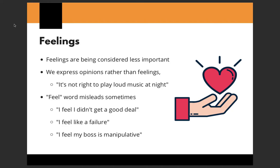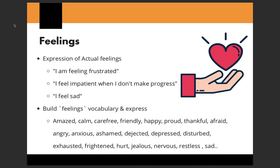Another example is using the word 'feel' in a misleading way: 'I feel I didn't get a good deal,' 'I feel like a failure,' 'I feel my boss is manipulative' — these do not express actual emotions. The correct way is to say 'I am feeling frustrated,' 'I feel impatient,' 'I feel sad.' Build your emotional vocabulary: amazed, calm, friendly, happy, proud, afraid, angry, anxious, ashamed, dejected, depressed, disturbed, exhausted, frightened, hurt, jealous, nervous, stressed, and many more.